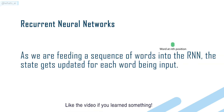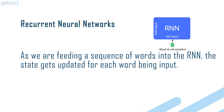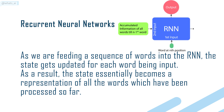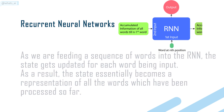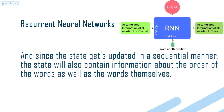As we are feeding a sequence of words into the RNN, the state gets updated for each word being input. As a result, the state essentially becomes a representation of all the words which have been processed so far. And since the state gets updated in a sequential manner, the state will also contain information about the order of the words as well as the words themselves.